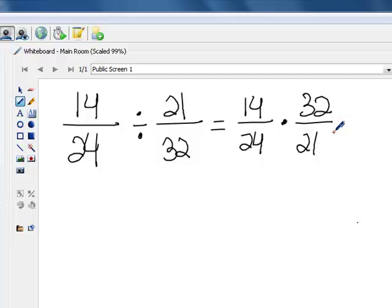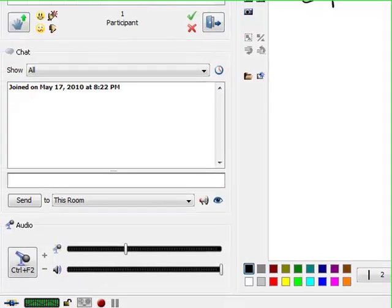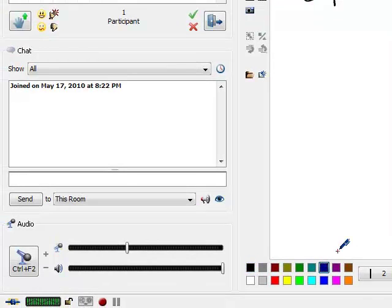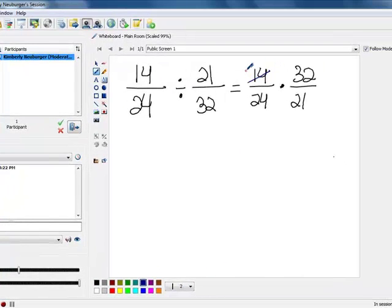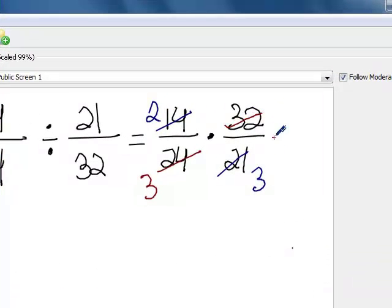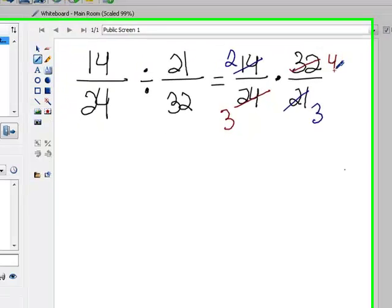So now we can go ahead and match things up that can cross-cancel. I notice that 7 goes into my 14 twice and into my 21 three times. Now if I look at what's left, I can divide 8 into my 24 three times and 8 into my 32 four times.